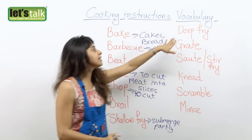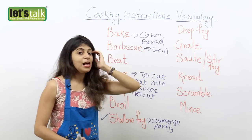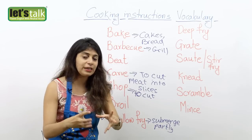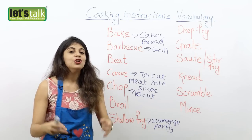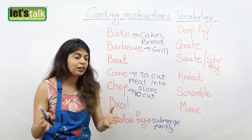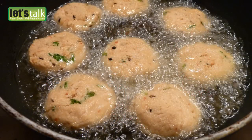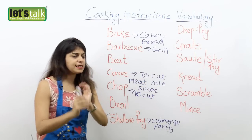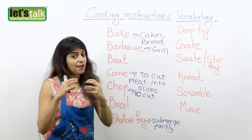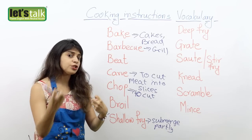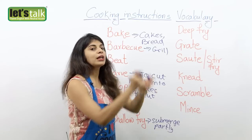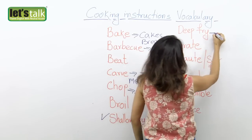And then what does deep fry mean? Deep fry means when you dip your food completely into the oil. Your cooking pan is full of oil and you submerge the whole thing into that hot oil. So that is deep fry. Shallow fry means very little oil and you submerge food partly, whereas deep fry is when you completely submerge your food.